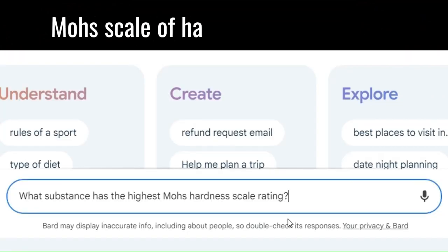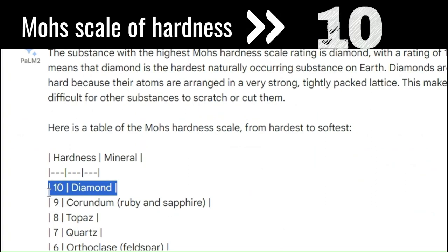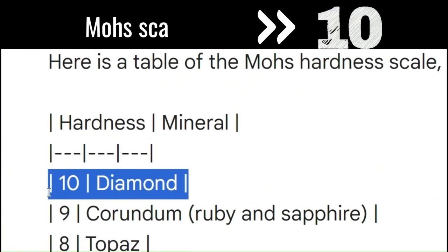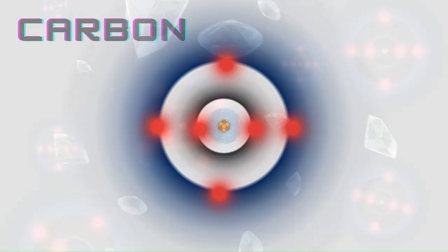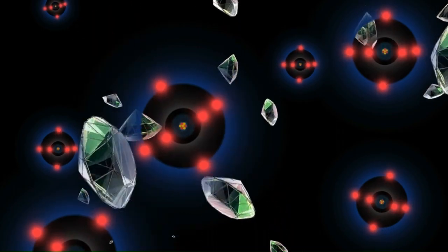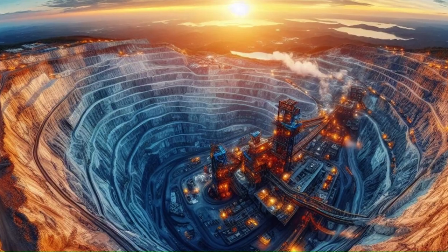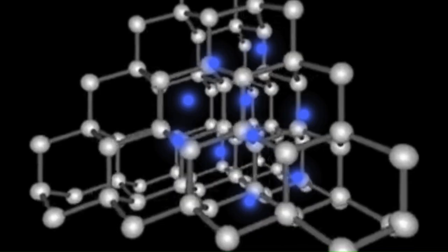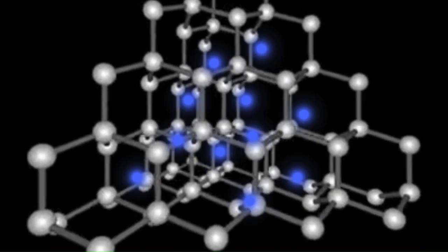Diamonds often represent purity and unyielding strength. These mesmerizing crystals, composed solely of carbon atoms, are renowned for their natural beauty. But did you know that during the creation process in the Earth's crust, diamonds can pick up impurities, particularly nitrogen atoms?